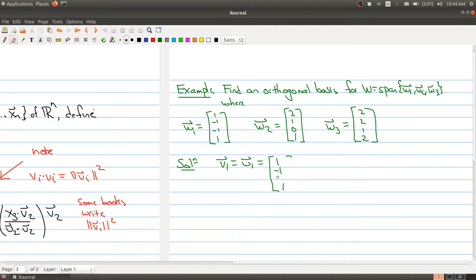One, negative one, negative one, one. And that's my first vector of my orthogonal basis. So it looks like I'm a third done already.